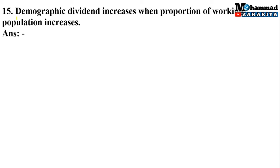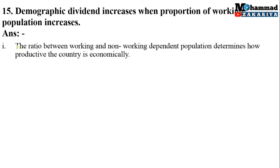Geographical reason number 15: Demographic dividend increases when proportion of working population increases. जो demographic dividend है, जो benefit मिलता है citizens को, यह proportion of working population increase होने पर बहुत ज़्यादा फायदा देता है। Point number 1: The ratio between working and non-working dependent population determines how productive the country is economically. Working population और non-working population का जो ratio होता है यही decide करता है कि उस country का economy कितना productive रहेगा।